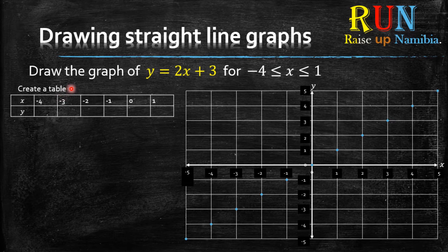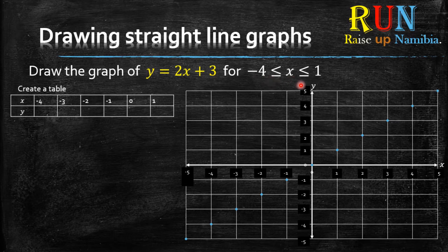When you create a table, you want to create it with two rows — one row for the x-axis and then the second row for the y-axis. How do we find the figures for the x-axis? You look at your condition. You are given a condition that x is equal to or in between negative 4 and 1, so you just number them the same way they are numbered on the number line.